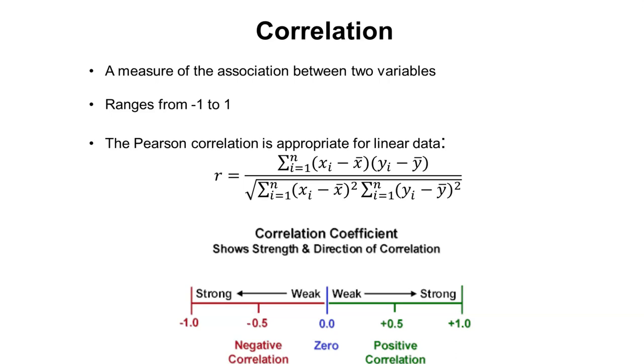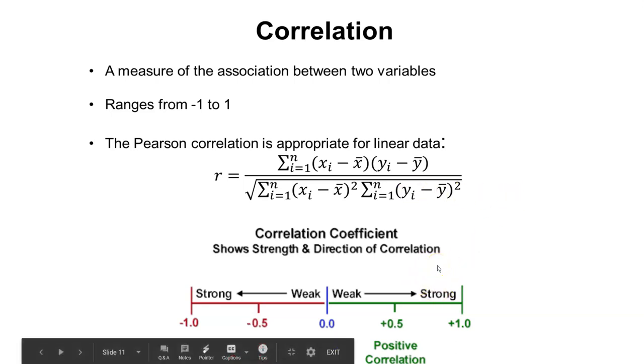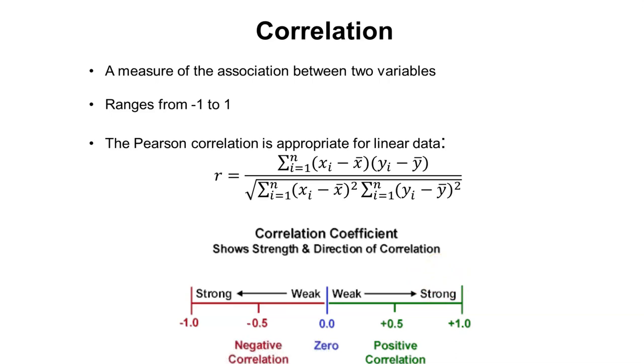If the correlation between two variables is 0.9, that would indicate a strong positive correlation. If it's 0, it indicates no correlation. If it's negative 0.9, that's a strong negative correlation.